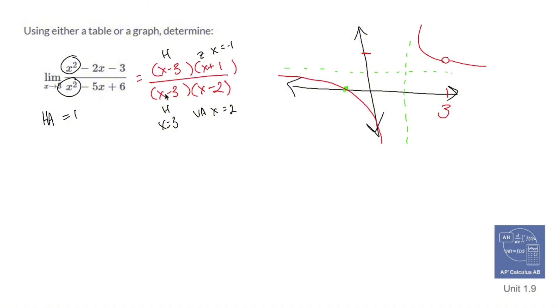I'm actually going to use the fact since these guys cancel out, that leaves me with the limit as x approaches 3 of x plus 1 over x minus 2.